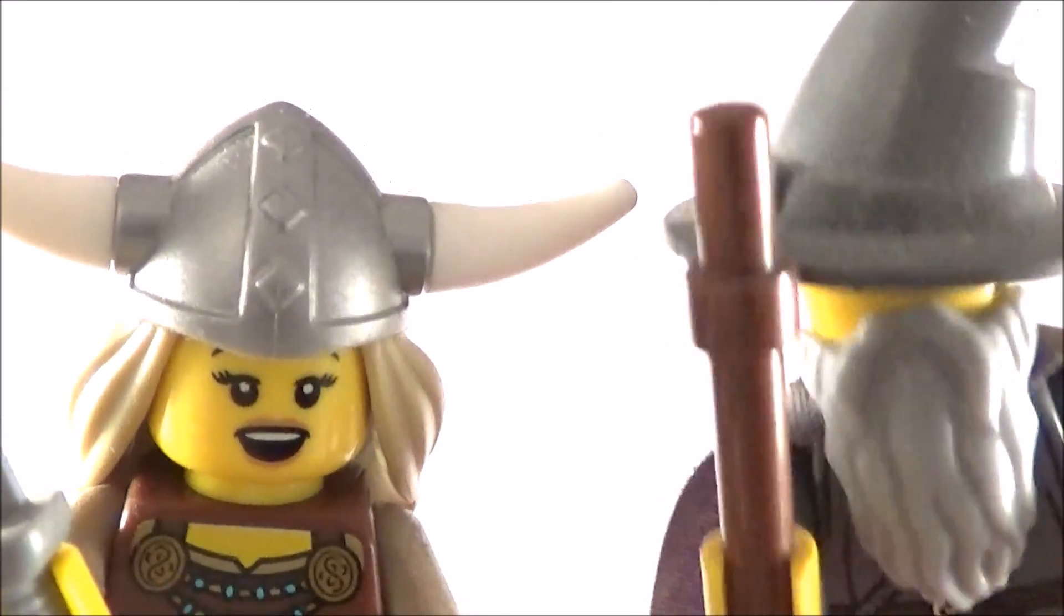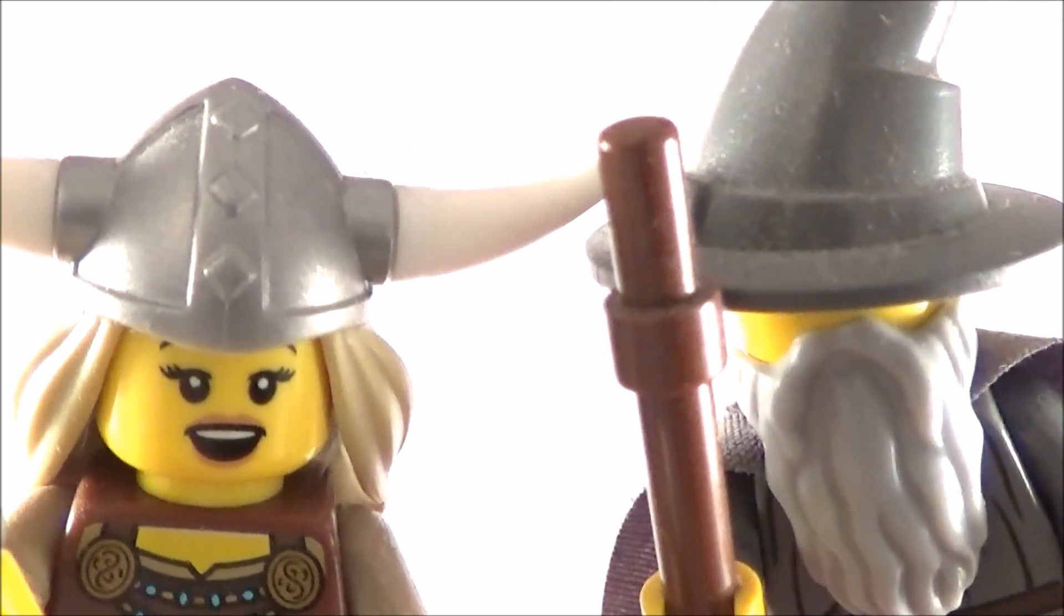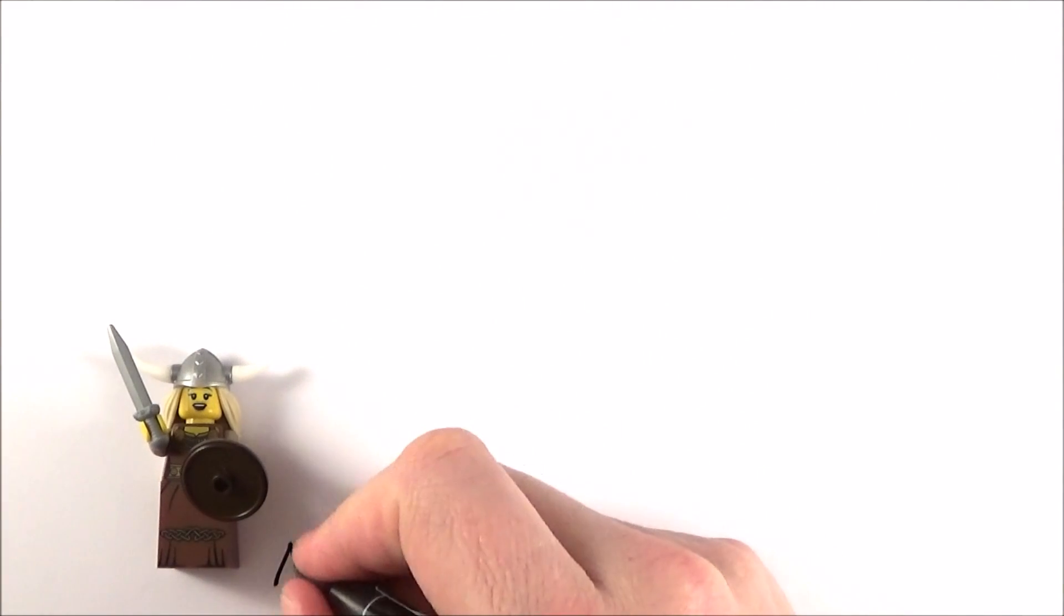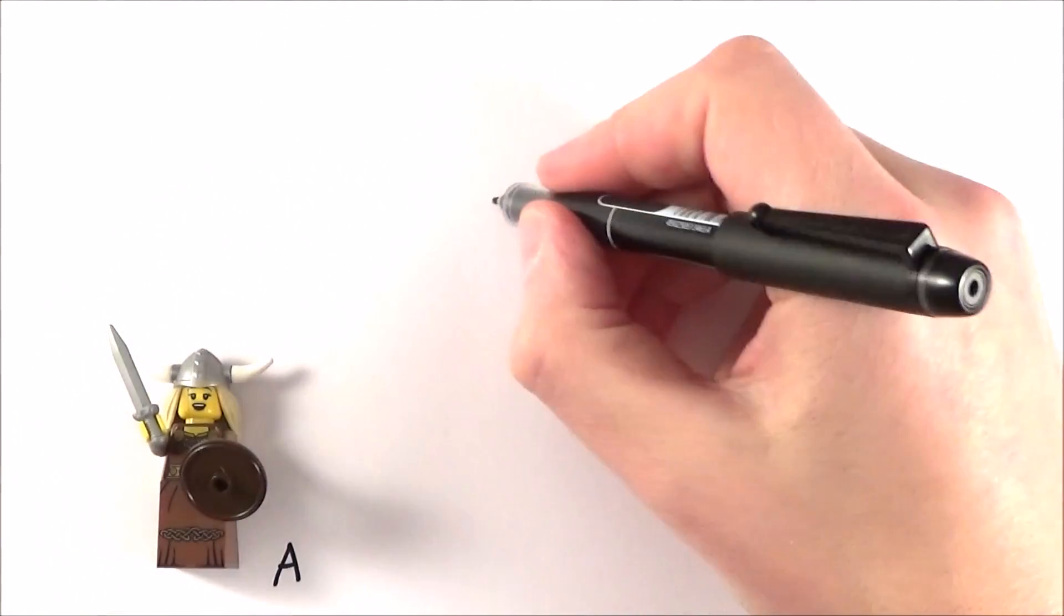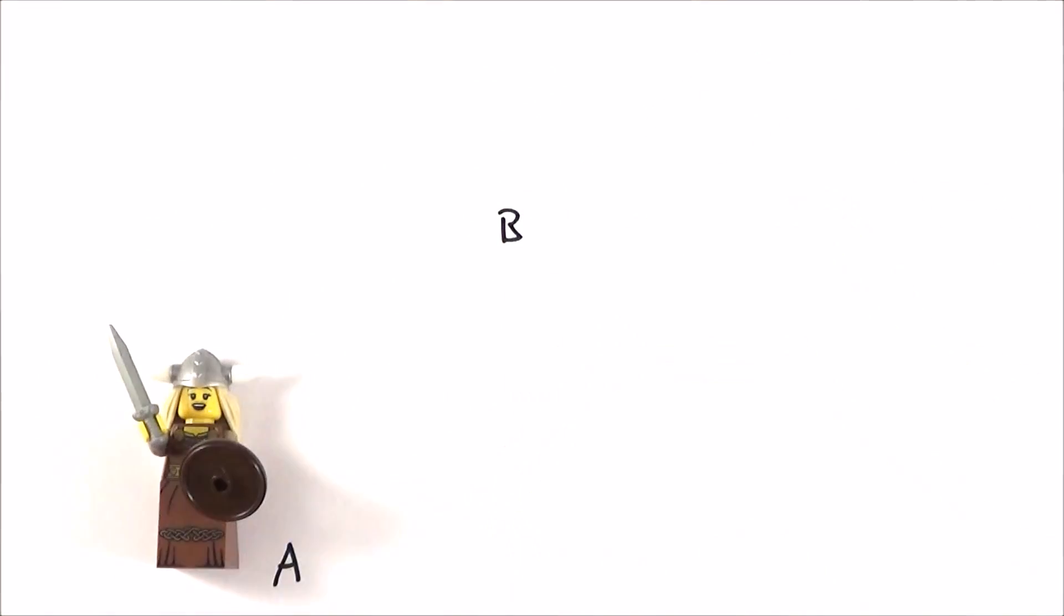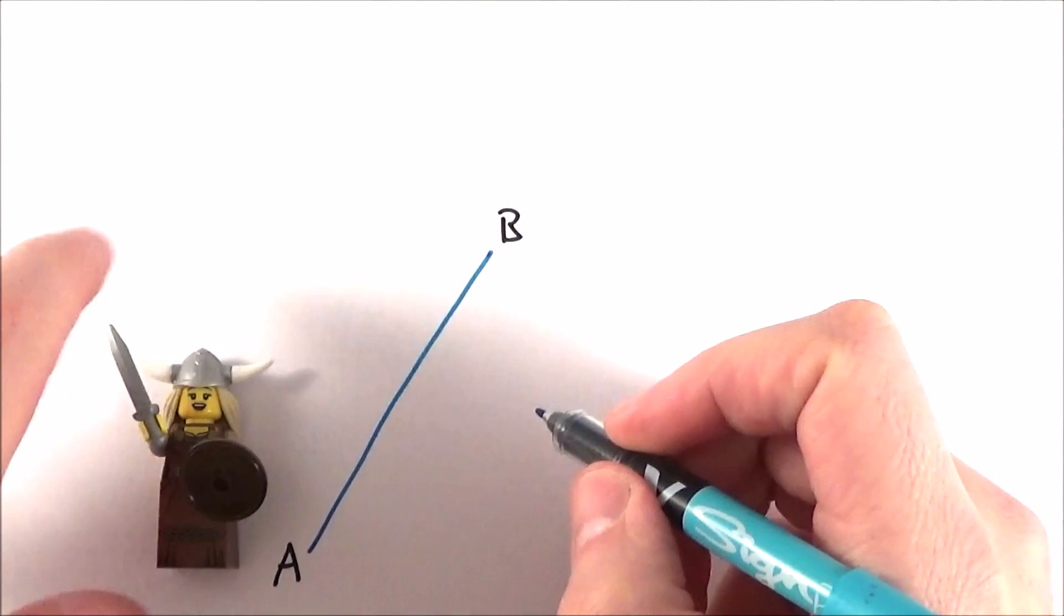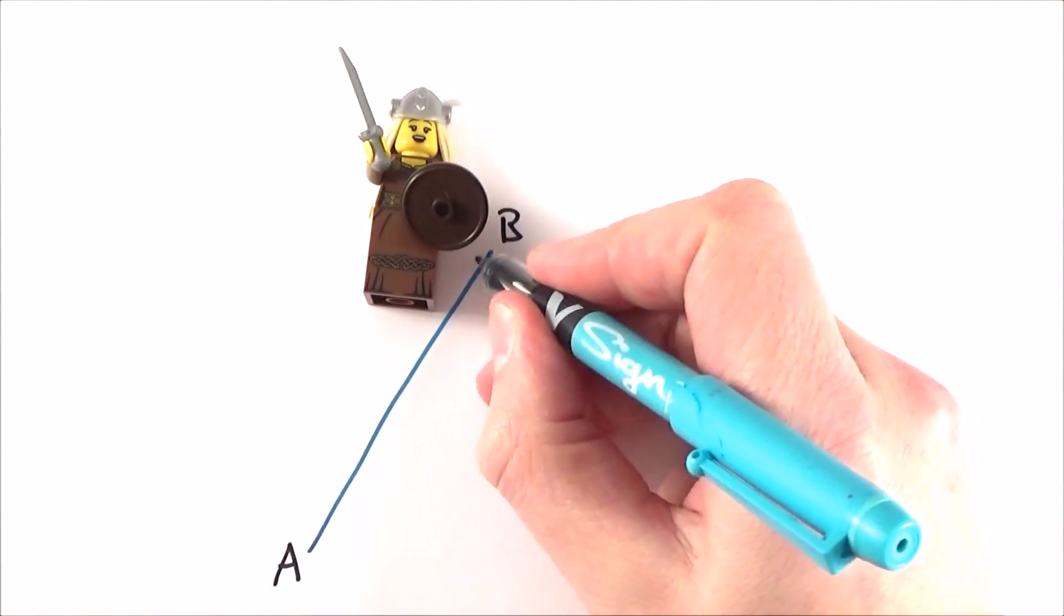This video is all about scalars and vectors. Let's consider a journey that this Viking lady takes as she moves from point A maybe to point B. If she goes from point A to point B in a straight line then that's where she ends up. All fairly straightforward.